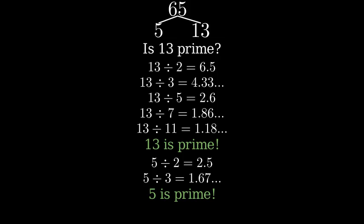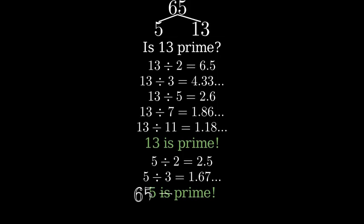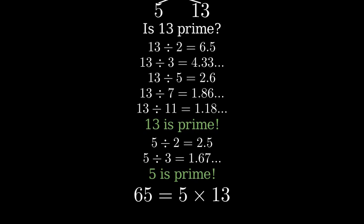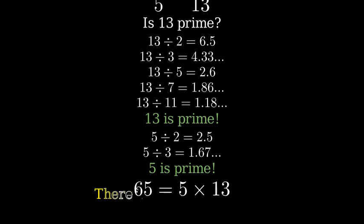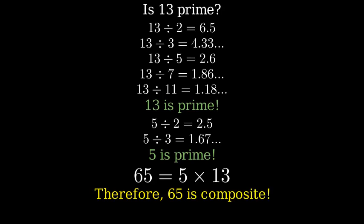Now we can write 65 as a product of its prime factors. 65 equals 5 times 13. Since we can write 65 as a product of two prime numbers, we can conclude that 65 is composite.